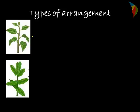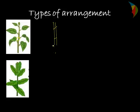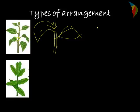The first is alternate phyllotaxy. Here, a single leaf arises from each node. If this is a node of the plant and a branch, then a single leaf arises from there — this is called alternate phyllotaxy.